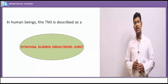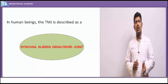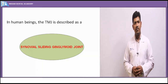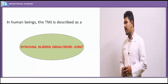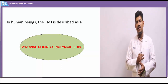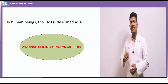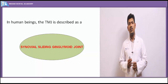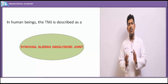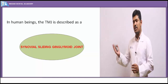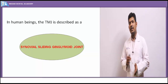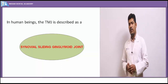This is a unique joint not seen in any other kind of joint within the human body, primarily because it has both sliding capabilities as well as hinging capabilities. It is a combination of two types of movements, and hence it is called a synovial sliding ginglymoid joint.